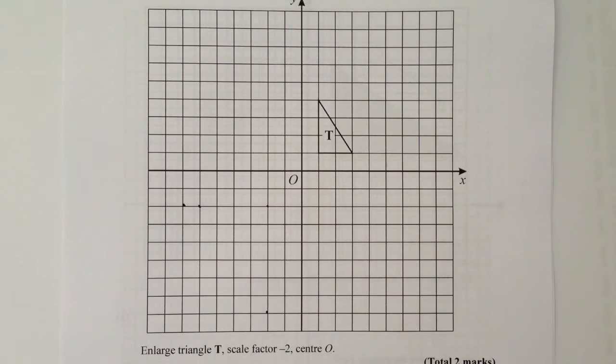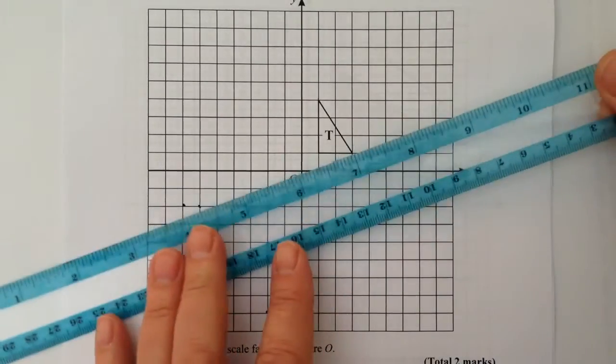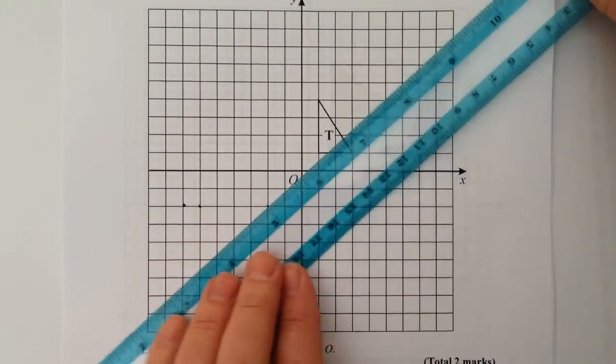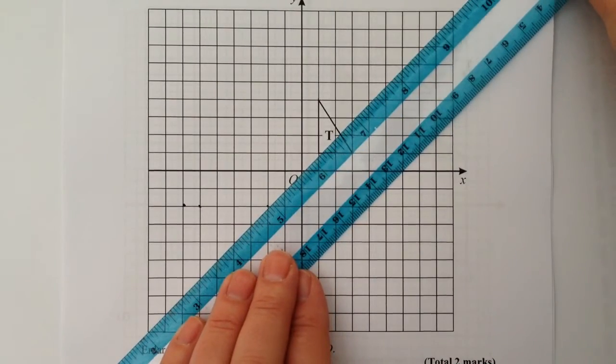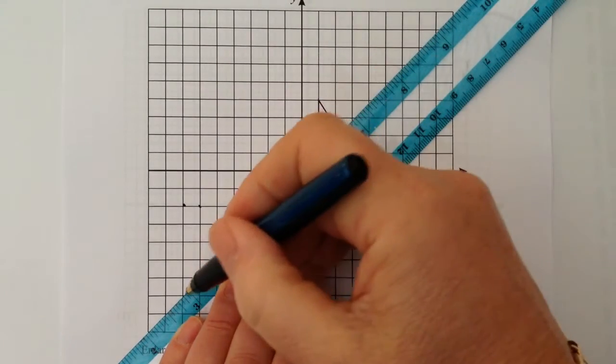The first thing is I'm going to draw in my lines of enlargement, which in this particular question asks for it to be put through a center of zero. So if I draw my lines in, it's going to give me this sort of center of enlargement.